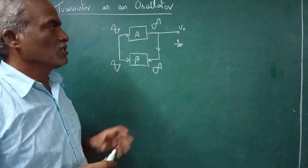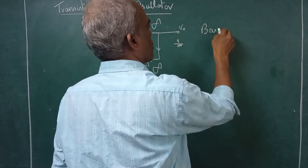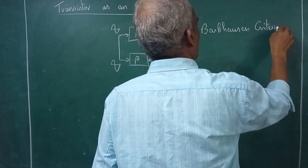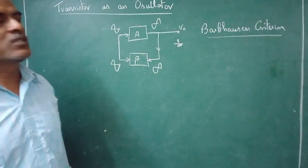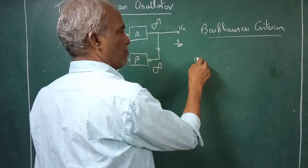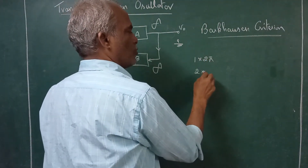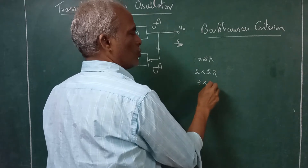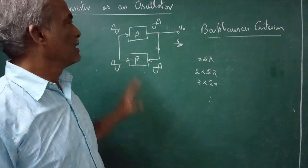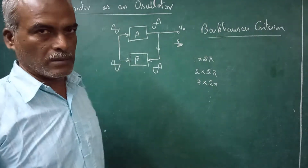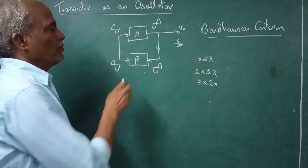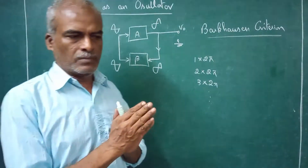That is called the Barkhausen criterion for oscillation. The Barkhausen criterion states that the total phase shift around the loop must be integral multiples of 2π — that means 1×2π, 2×2π — so this is called integral multiples of 2π. That is, it should have positive feedback, not negative.